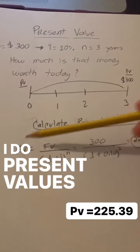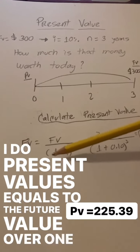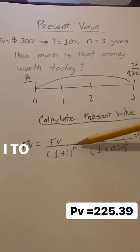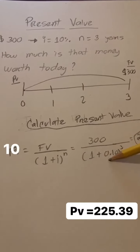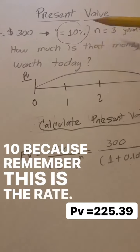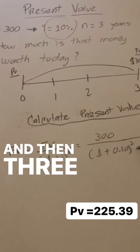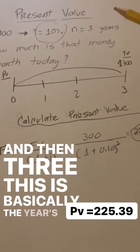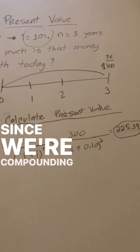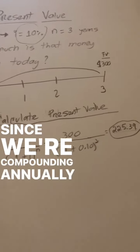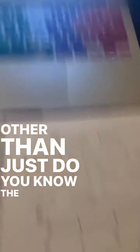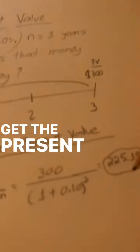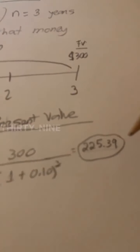I'm going to bring this amount to the present. Present value equals the future value over (1 + i) to the n. So 300 is the future value, 1 plus 0.10 is the rate, and 3 is the number of years. Since we're compounding annually, we just do the math, and we get that the present value is $225.39.